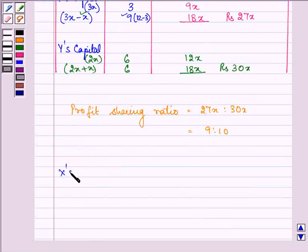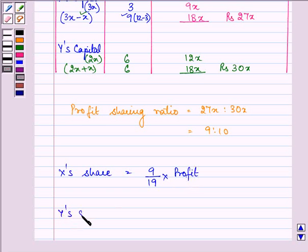Now, X's share in profit will be 9 upon 19 into profit, and Y's share in profit will be 10 upon 19 into profit.